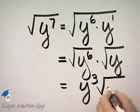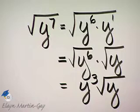And then I simply write square root of y beside that. That will not come out of the radical. So simplified, this is y cubed times the square root of y.